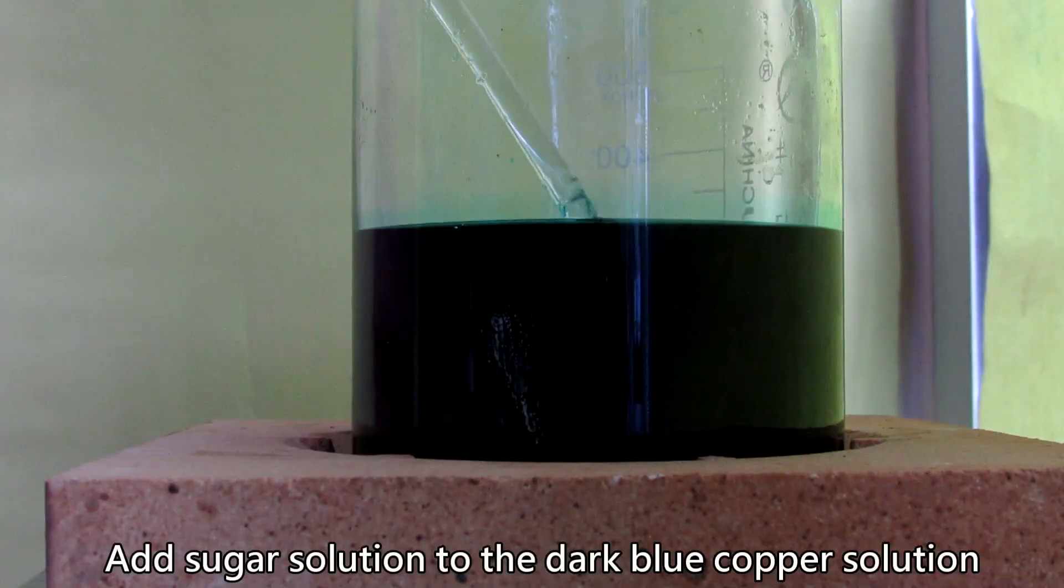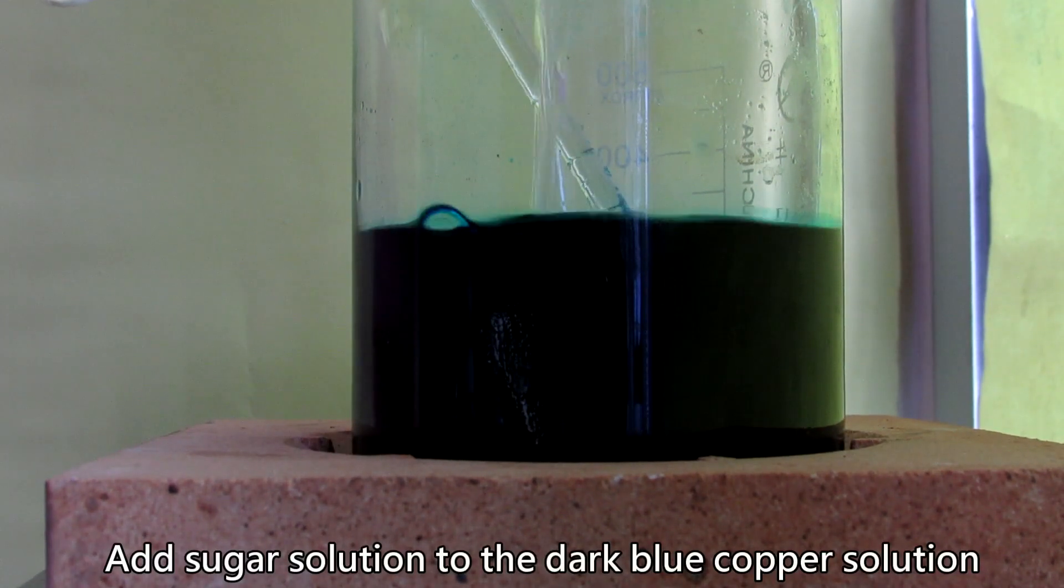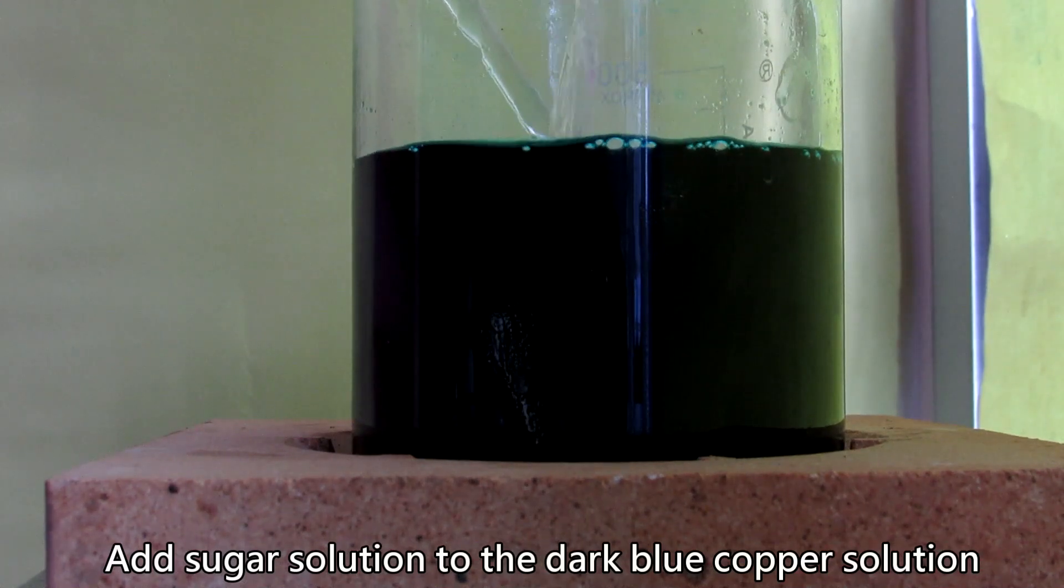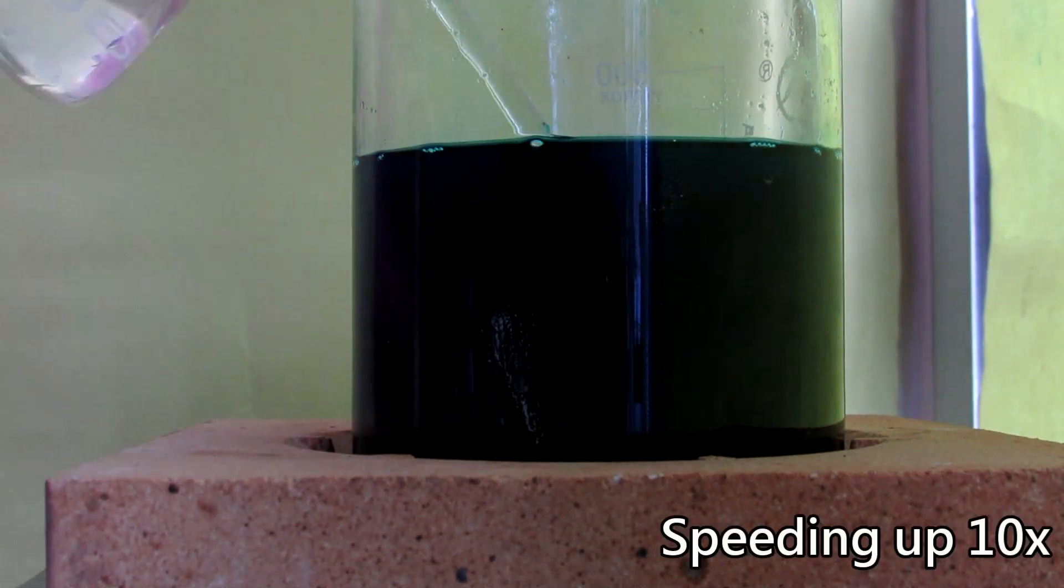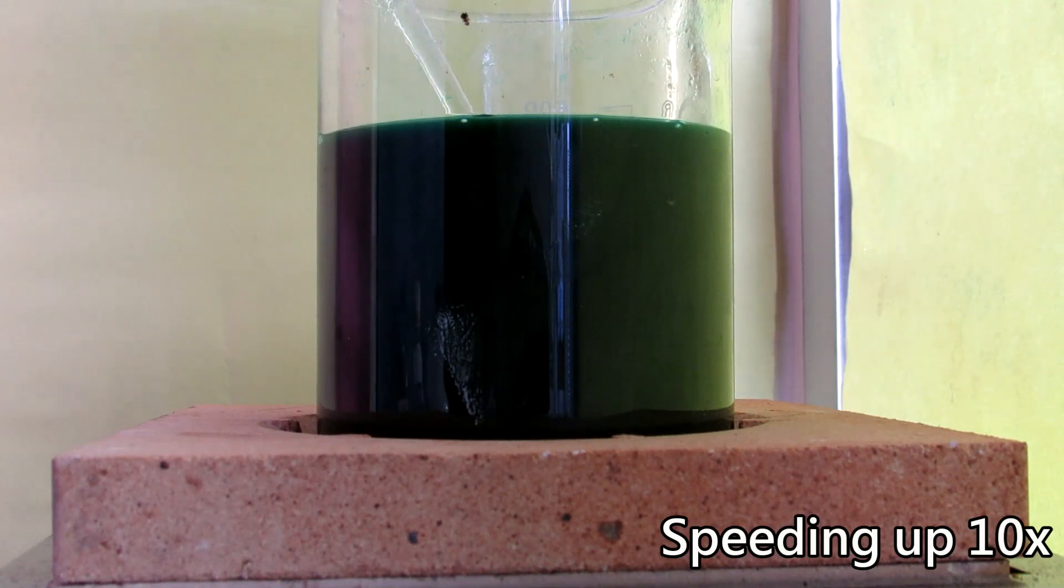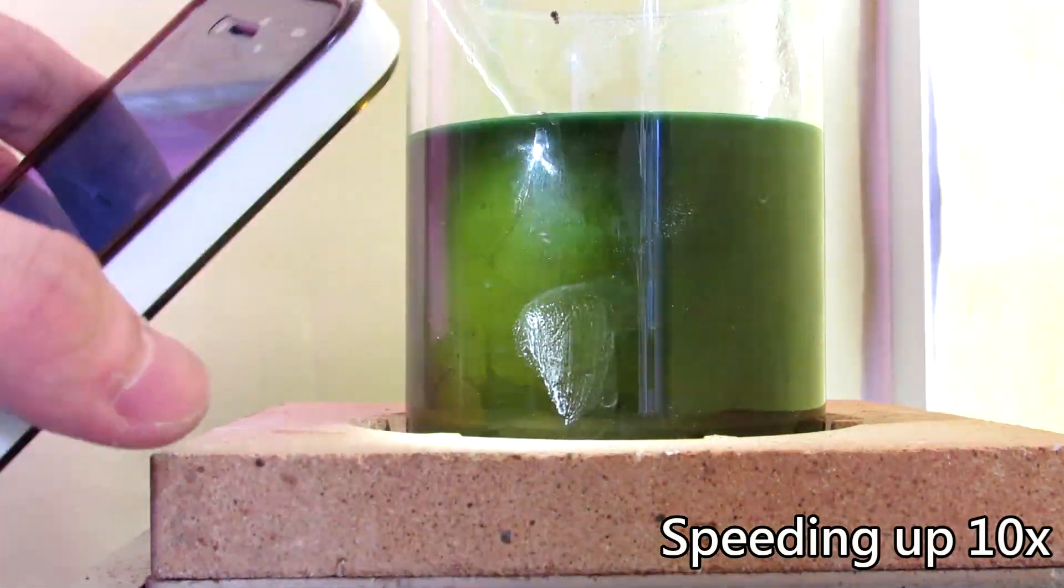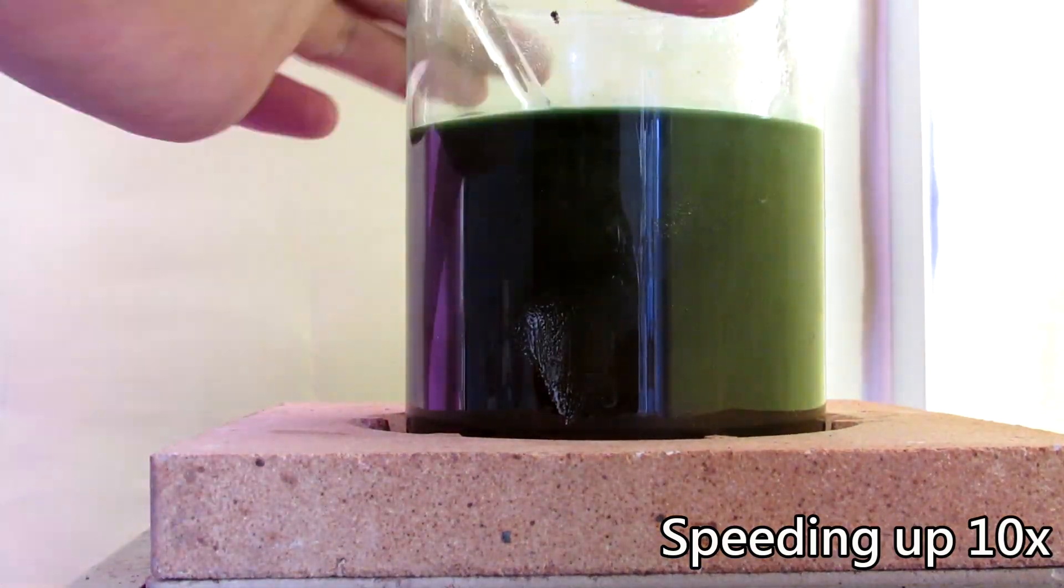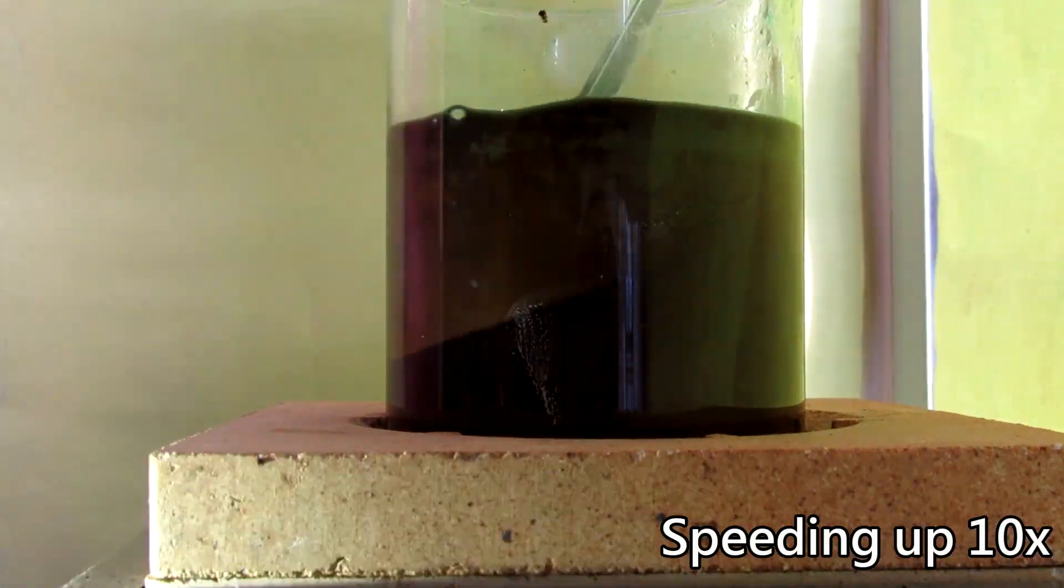Then add the hot reducing sugar solution to the deep blue solution. Then continue heating the solution and wait for the formation of red copper oxide. The color of the solution should slowly turn from deep blue to green and then to yellow and red. As you can see in this shot, the upper part of the solution is relatively blue and the lower part has already turned reddish orange.